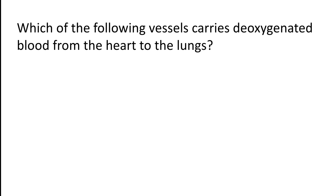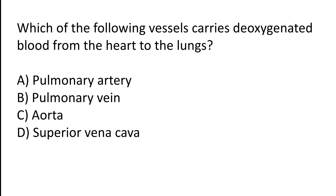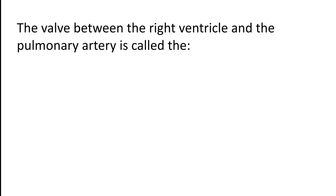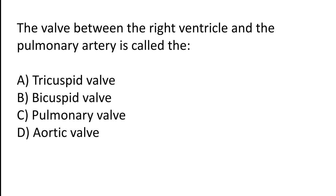Which of the pulmonary vessels carry deoxygenated blood from the heart to the lungs? The correct answer is option A. The wall between the right ventricle and the pulmonary artery is called the pulmonary wall.